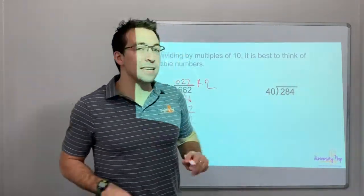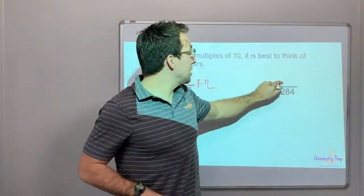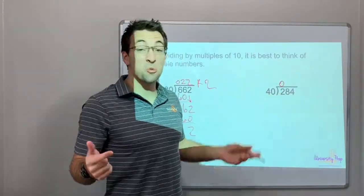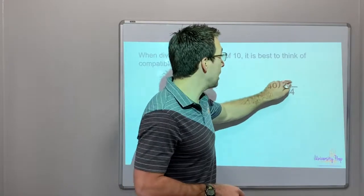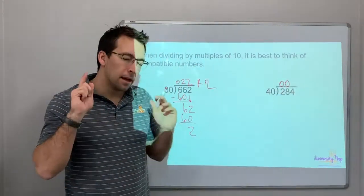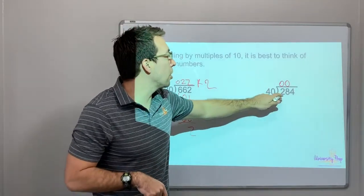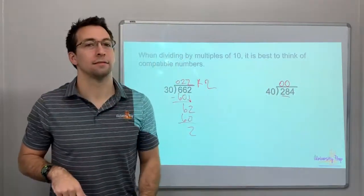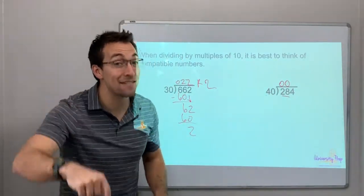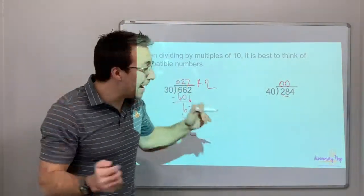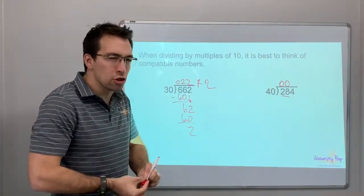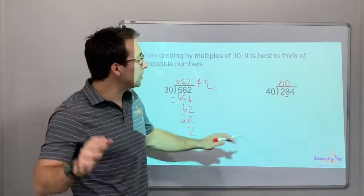40 goes into 2, 40 goes into 2, 0 times. 40 goes into 20, 0 times. 28, 0 times. Compatible numbers. How many times does 4 go into 28? 4 times 7 is 28. That is why your times tables are so important. They never go away. Check this out.